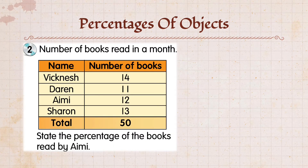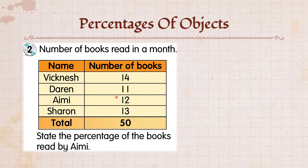Example number 2. Number of books read in a month. Jumlah buku yang dibaca dalam masa sebulan: Vignish 14, Darren 11, Taimi 12, Sharon 13. Total: 50. Ini ialah jumlah keseluruhan buku yang dibaca oleh keempat-empat orang ini. Soalan: State the percentage of the books read by Aimi. Nyatakan peratus untuk buku yang dibaca oleh Aimi.